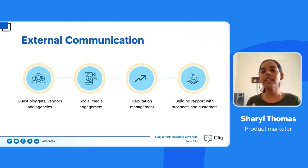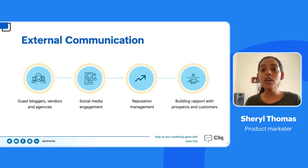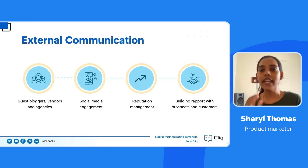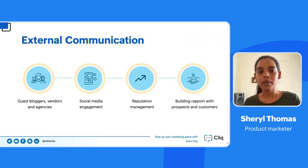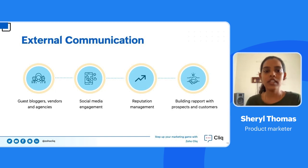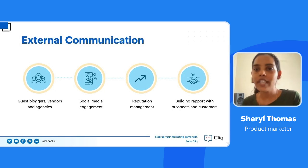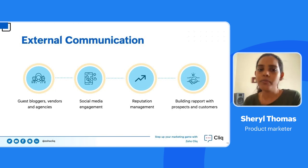Marketing teams also use social media to build presence among the digital crowd. According to Smart Insights, almost 58.4% of the world is on social media. By creating a voice online, you're reaching out to more than half the people in the world — just by putting out a tweet, you can reach half the people on the planet, which is pretty remarkable for marketing.